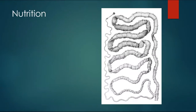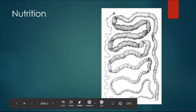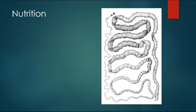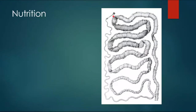If we talk about the scolex first: the scolex has four suckers and two rows of hooks. An important point is that these suckers are not helping in sucking of food. The suckers are only meant for attachment and do not serve any purpose in the nutrition of Taenia solium.